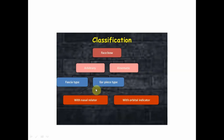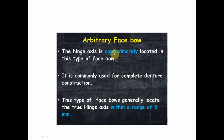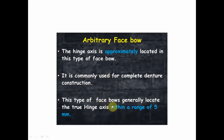Arbitrary facebow is again divided into fascia type facebow and earpiece type facebow, and also divided with reference to the third point of reference — that is, with the nasion relater or with the orbital indicator. In the arbitrary facebow, the hinge axis is approximately located. This is commonly used for complete denture construction. This type of facebow generally locates the true hinge axis within a range of 5 mm.